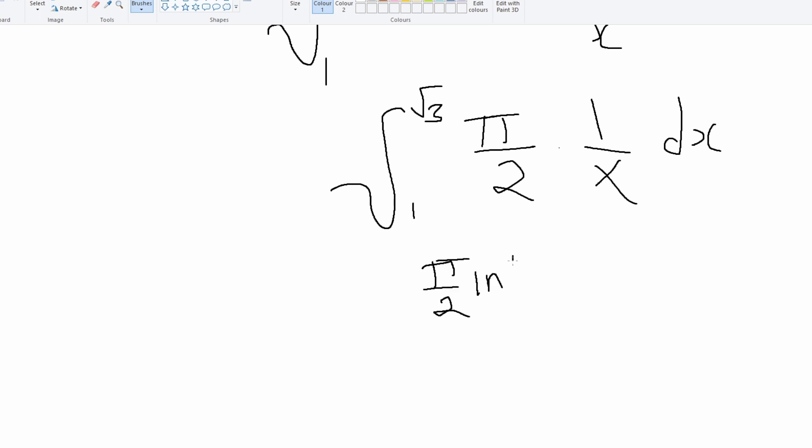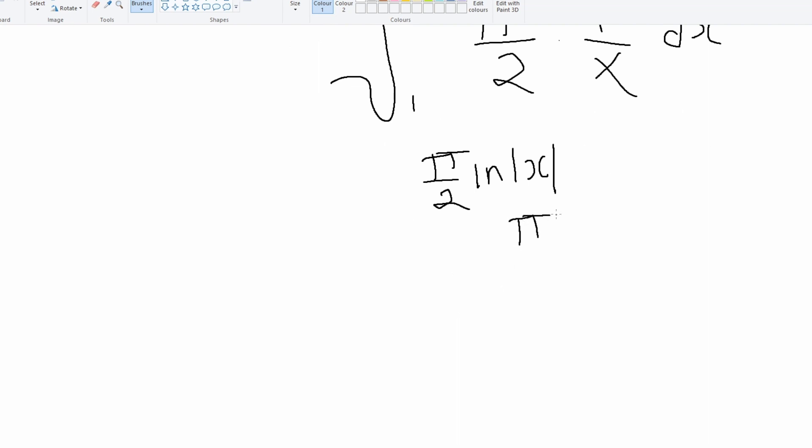We're just going to get this. But now we just plug in the values. It doesn't make sense to plug in 1 here because ln(1) is just equal to 0. So the actual answer really is just (π ln(√3))/2, and that's our actual answer for question 2.